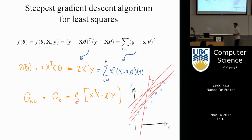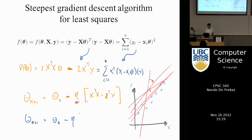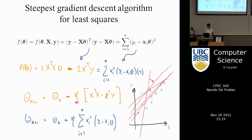Once you have an expression for the gradient, the algorithm is: the new theta equals the old theta, going in the opposite direction of the gradient by an amount eta — which you can choose to be 0.2, 0.8, or 1 — times the gradient. In this case the sign becomes a plus. Note that in the summation the factor of two can be absorbed into eta since eta is a constant — two times a constant is still a constant.